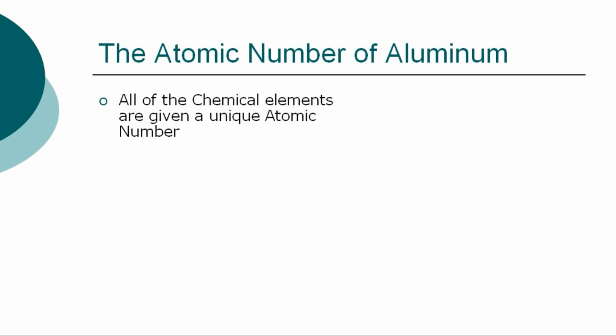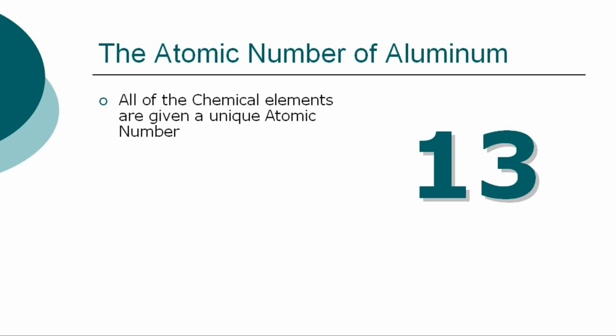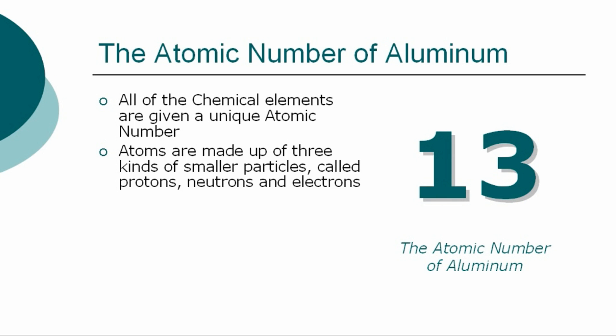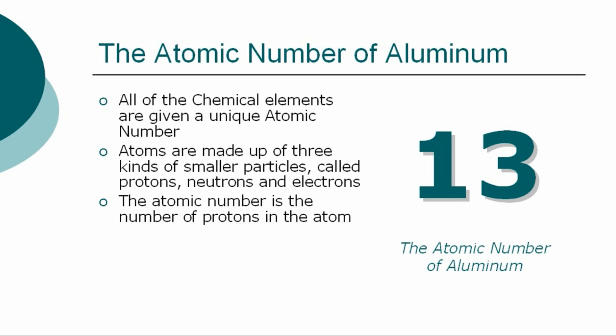All of the chemical elements are given a unique atomic number. The atomic number for aluminum is 13. Atoms are made up of three kinds of smaller particles called protons, neutrons, and electrons. The atomic number is the number of protons in the atom.